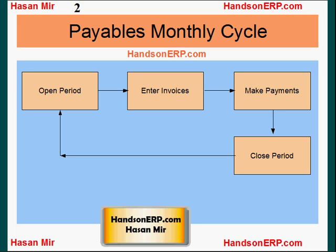That's how payables periods work. Now once the period is open, two main things happen in accounts payable. First, the clerks enter invoices. These invoices are coming from the vendors — vendors send you invoices, which arrive by mail, email, electronic interface, XML, or some other method. Sooner or later those invoices have to be entered in the system.